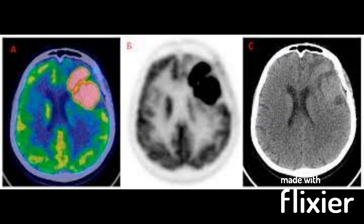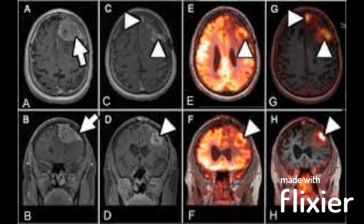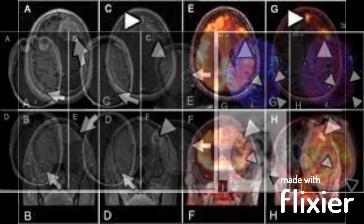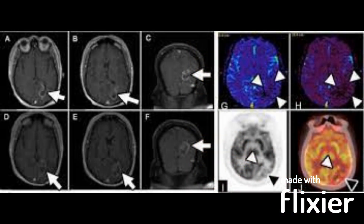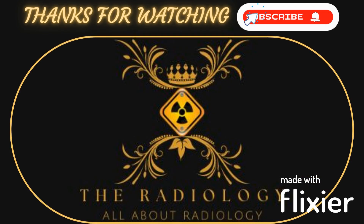مثال کے طور پر، ایک اسپیکٹ سکین دکھا سکتا ہے کہ کوئی دوا دماغ کے کسی حصے کو صحیح طریقے سے نشانہ بنا رہی ہے یا سرجری نے برین ٹیومر کو کامیابی سے ہٹایا ہے۔ خلاصہ یہ ہے کہ اسپیکٹ برین سکین کا منفرد پہلو یہ ہے کہ یہ دماغ کے بارے میں فعال معلومات فراہم کر سکتا ہے اور برین امراض کی تشخیص، نگرانی اور علاج کے اثرات کا جائزہ لینے کے لیے استعمال کیا جا سکتا ہے۔ شکریہ۔